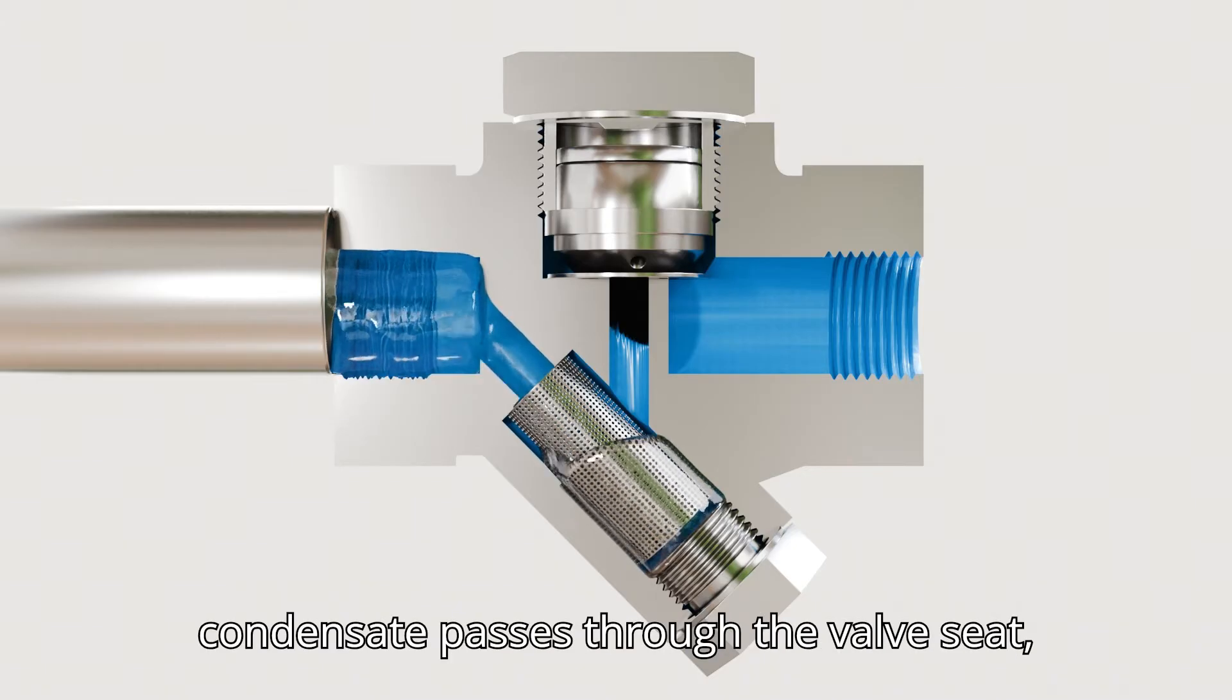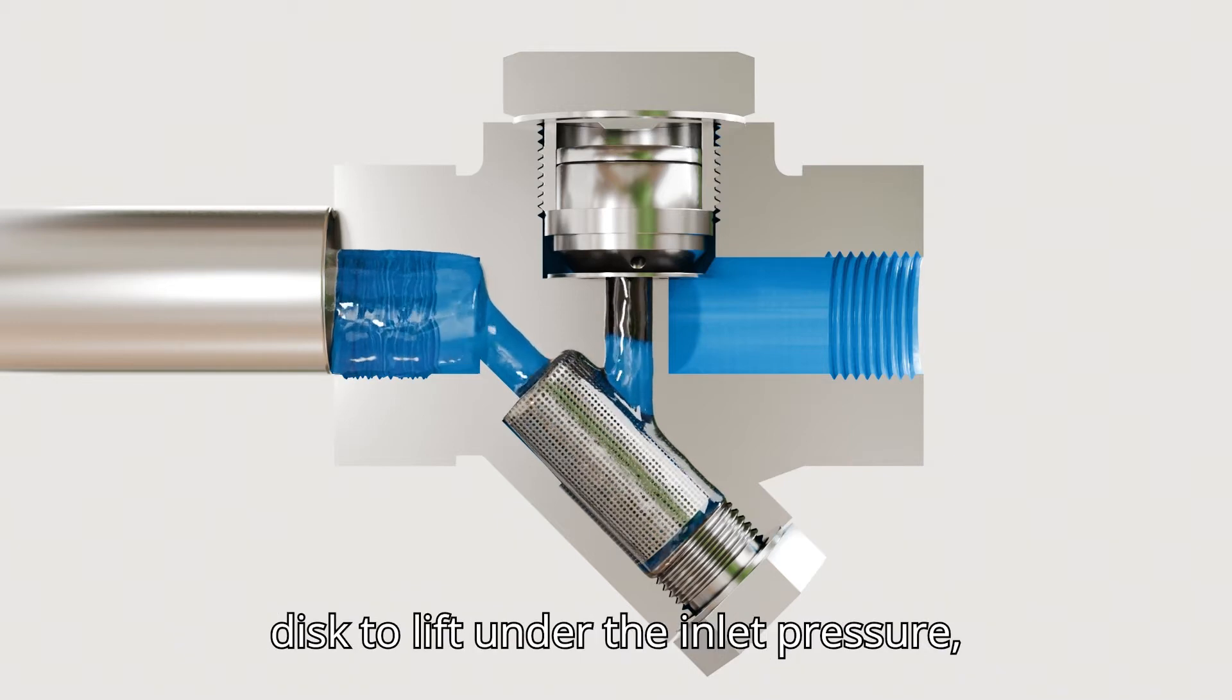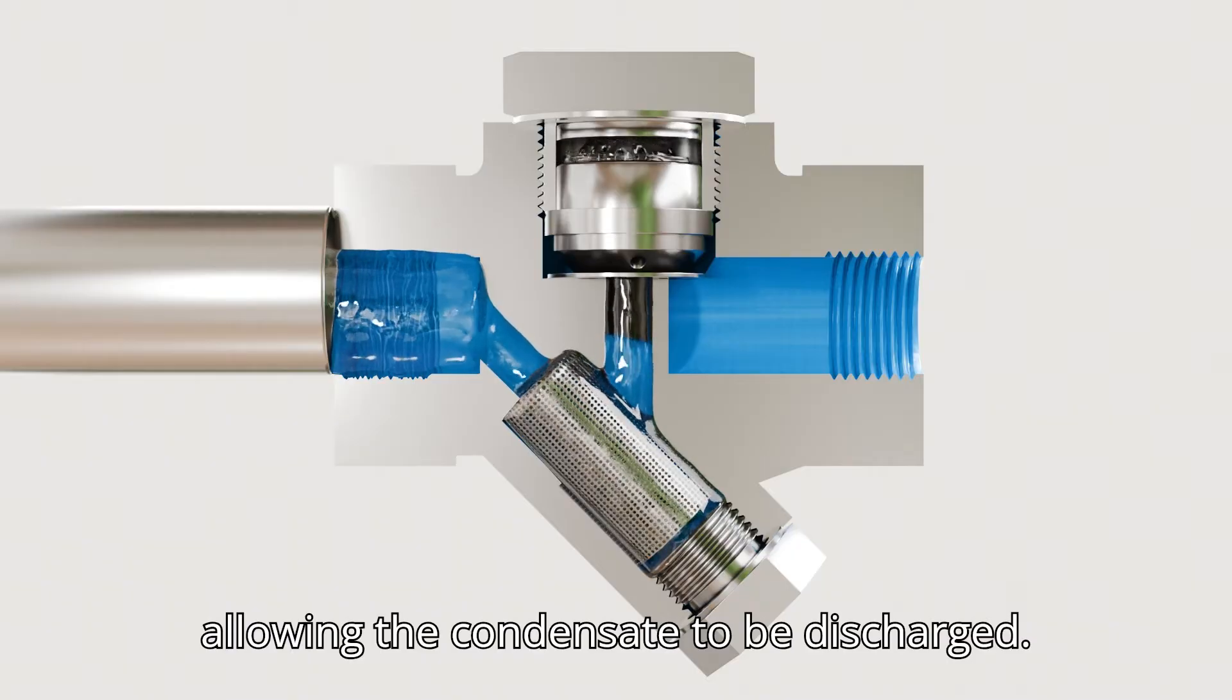When condensate passes through the valve seat, the flow rate is low, causing the valve disc to lift under the inlet pressure, allowing the condensate to be discharged.